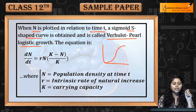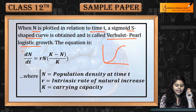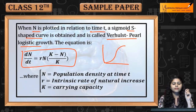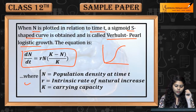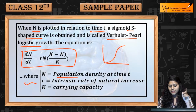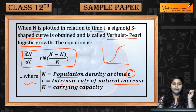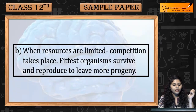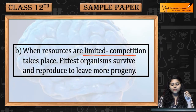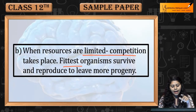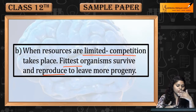Ise Verhulst-Pearl logistic equation growth kehte hain. Equation hai: dN/dt = rN × (K - N) / K. Jahan pe N is population density at time t, r is intrinsic rate of natural increase, aur K is carrying capacity. Jab resources limited hote hain, competition hoti hai, aur fittest organism survive karta hai aur reproduce karta hai.